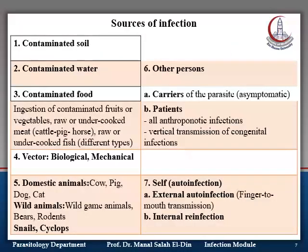From what we've studied, we can deduce the sources of infection: contaminated soil, contaminated water, contaminated food — whether fruits, vegetables, meat, or fish. There is also the biological or mechanical vector, and also animals — domestic animals such as cows and pigs, through their fur or through their meat — and also dogs and cats, through their fur or contamination with their stool and playing with them.